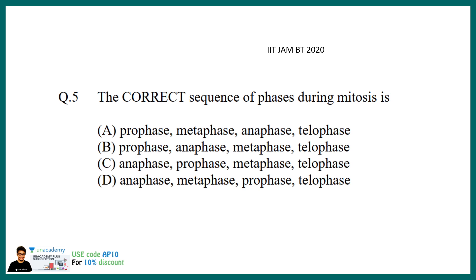IIT JAM 2020 asked: what is the correct sequence of phases during mitosis? The options were various combinations of prophase, metaphase, anaphase, and telophase. This is very easy and the correct option is option A: prophase, metaphase, anaphase, telophase.